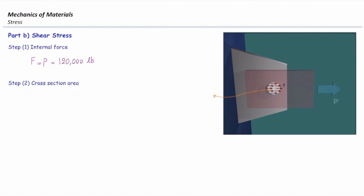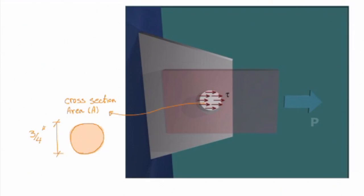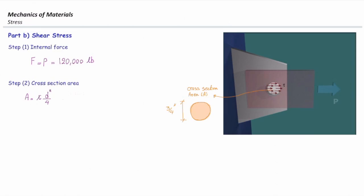Here, the cross-section area has a circular shape, as we see here, because the area of the pin is transferring that load. So that has a diameter of three quarter of inch. The area of the circle is pi d squared over 4. And if I plug the values, that gives me 0.441 square inch. The rest of that would be easier. Divide force by area, that gives us stress. That gives me 271,600 psi.